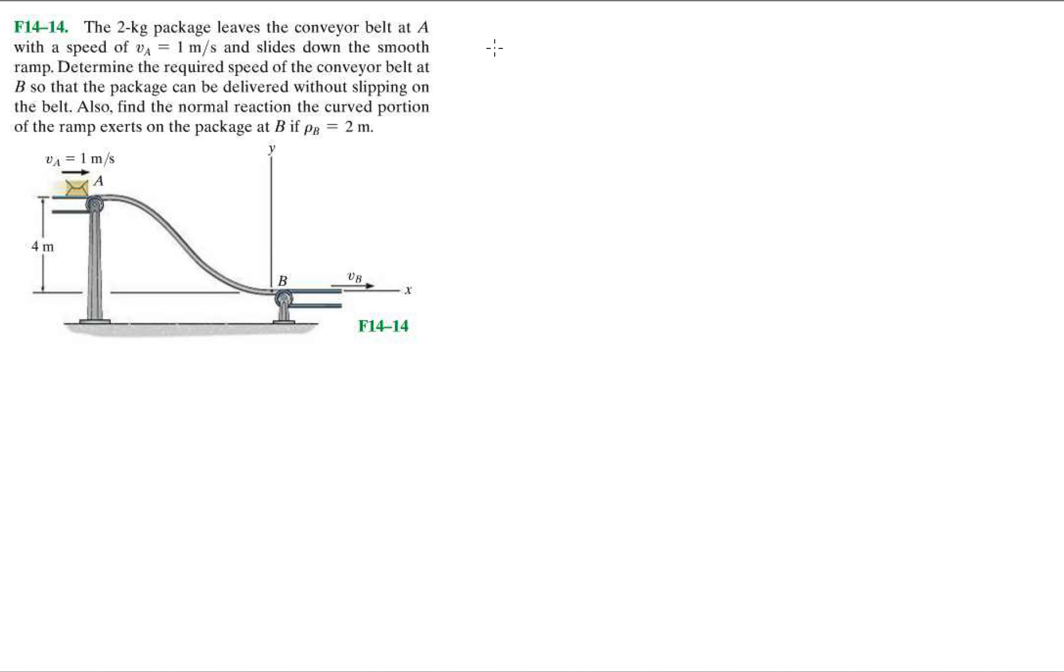In the previous video, I said that the total energy at state 1 has to equal the total energy at state 2. If we look at this diagram, assuming there's no friction because it's a smooth ramp, the total energy at A has to equal the total energy at point 1, has to equal the total energy at point 2.